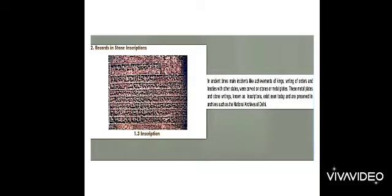Writing engraved on the stone surface is known as inscriptions. The achievements of kings, writing of orders, treaties and states — all these were carved on stones and metals. They are all preserved in archives. Archives means the place which stores historical records.